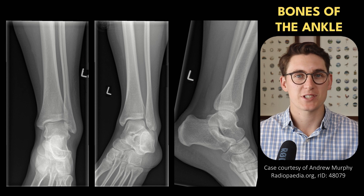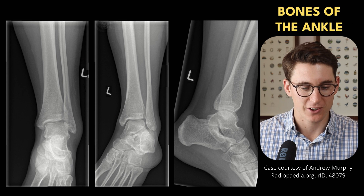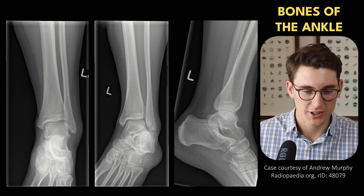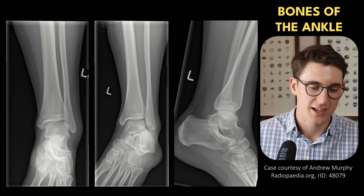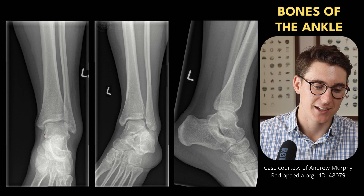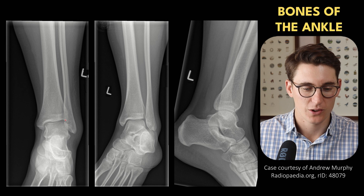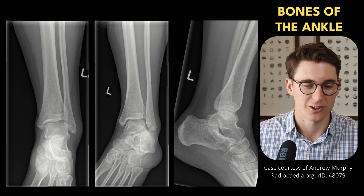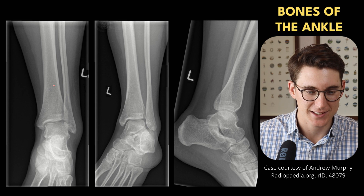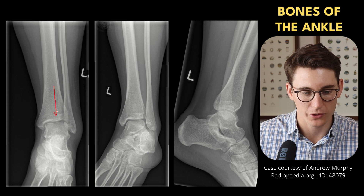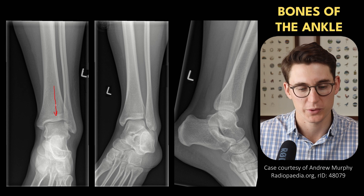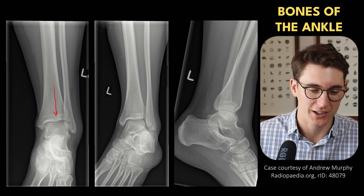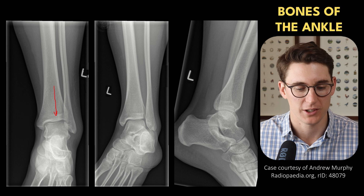Now there are actually only three bones that make up the ankle joint. We have our tibia here, our fibula laterally, and our talus of the hind foot. You can start by having a look at the tibia itself. We can see that the tibia is the main weight-bearing bone out of the two — there's not much weight-bearing happening through the fibula.